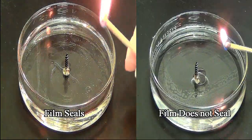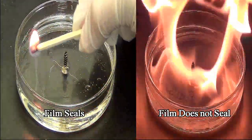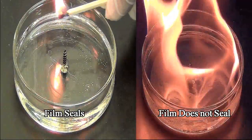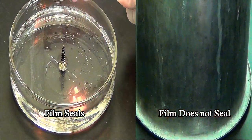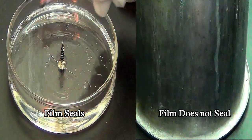Whether or not the film is sealed over the fuel becomes very apparent when an ignition source is introduced. Without a film, the fuel ignites quickly. A solution that forms a strong film, like the solution on the left, will quickly reseal even when physically broken.